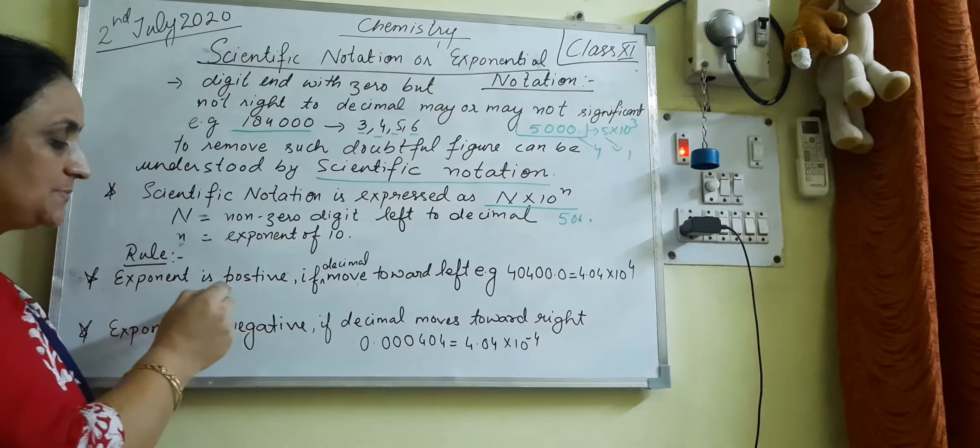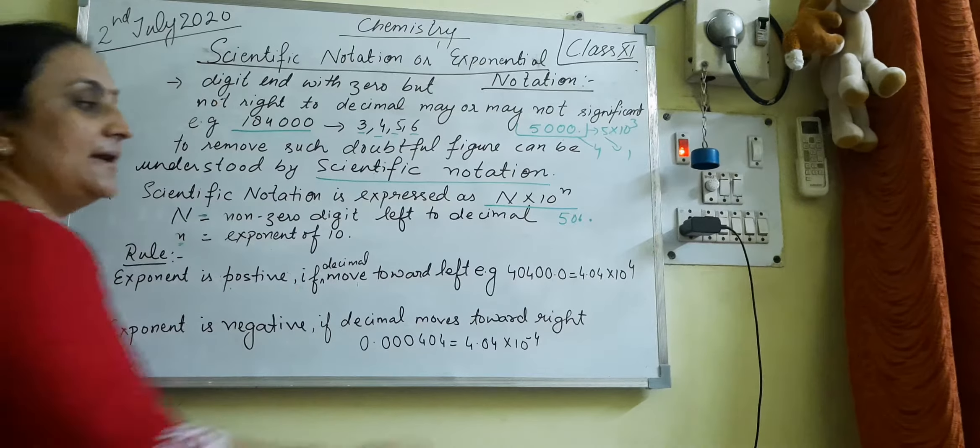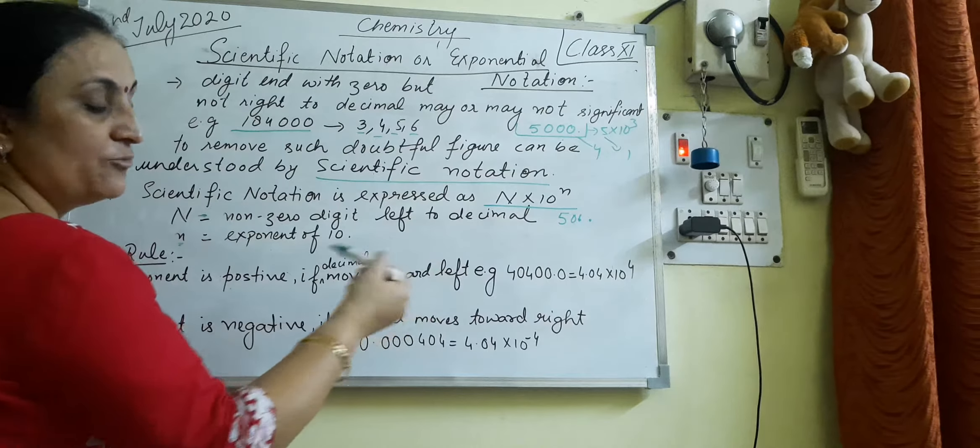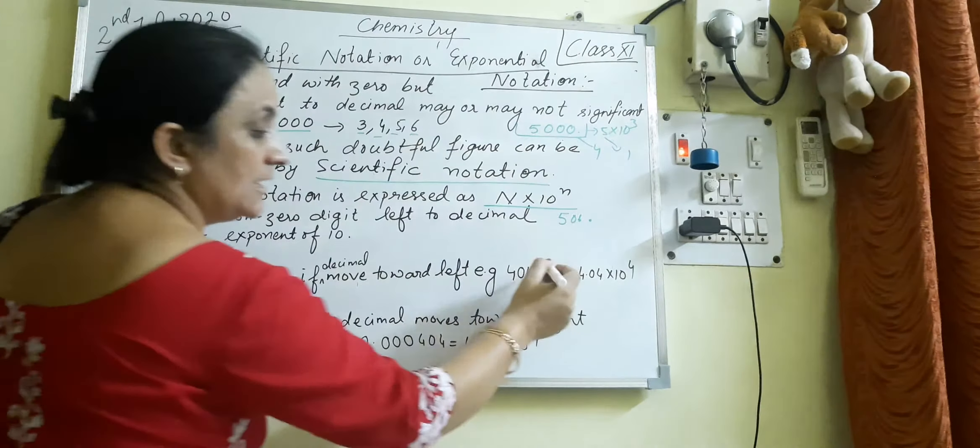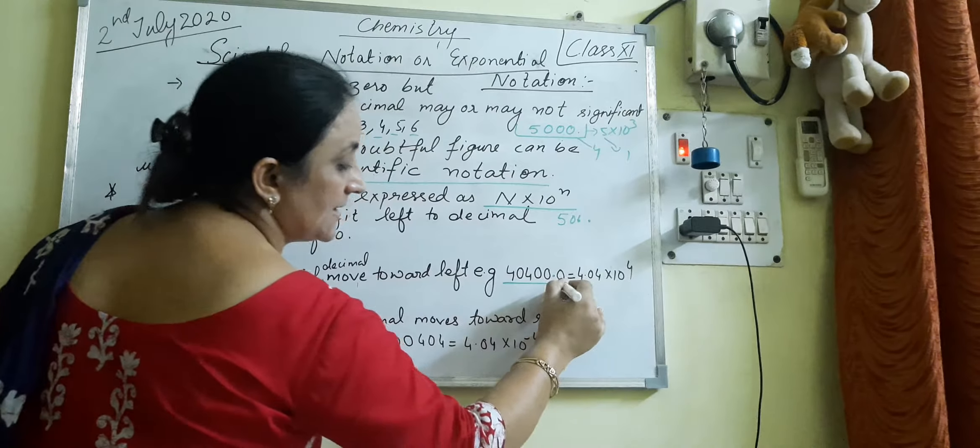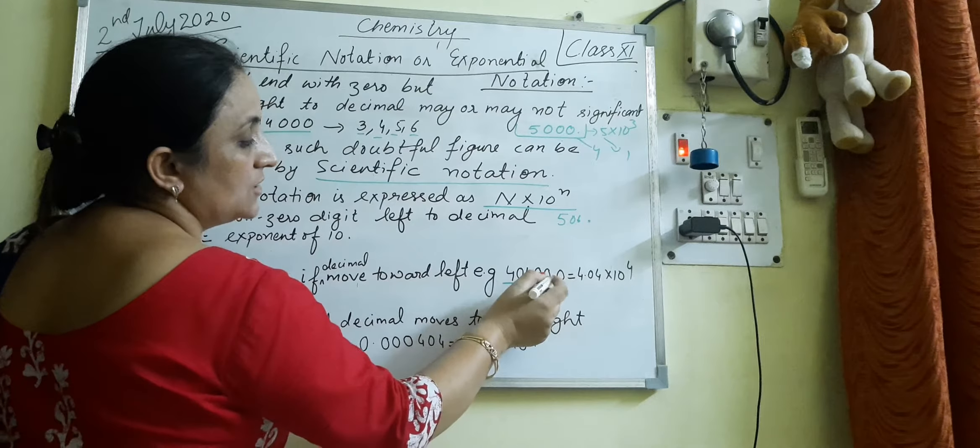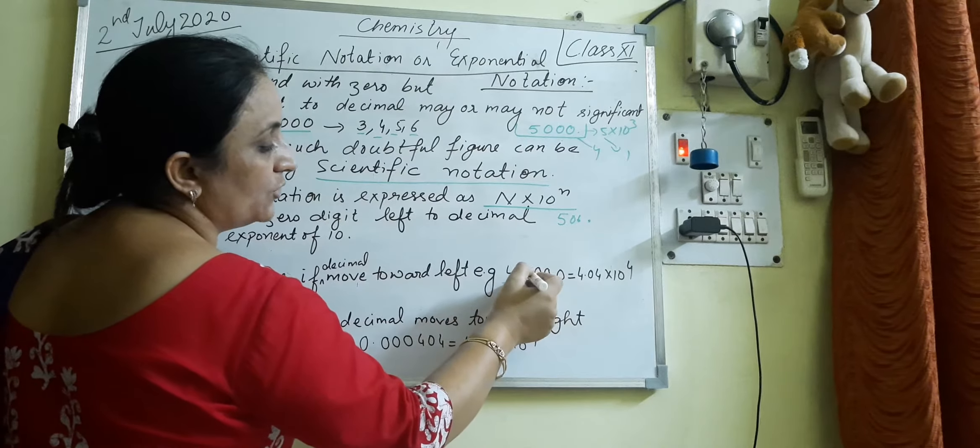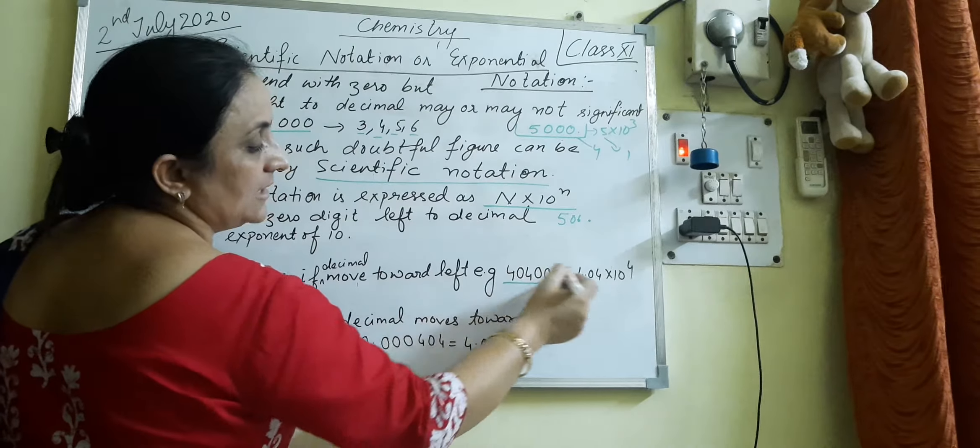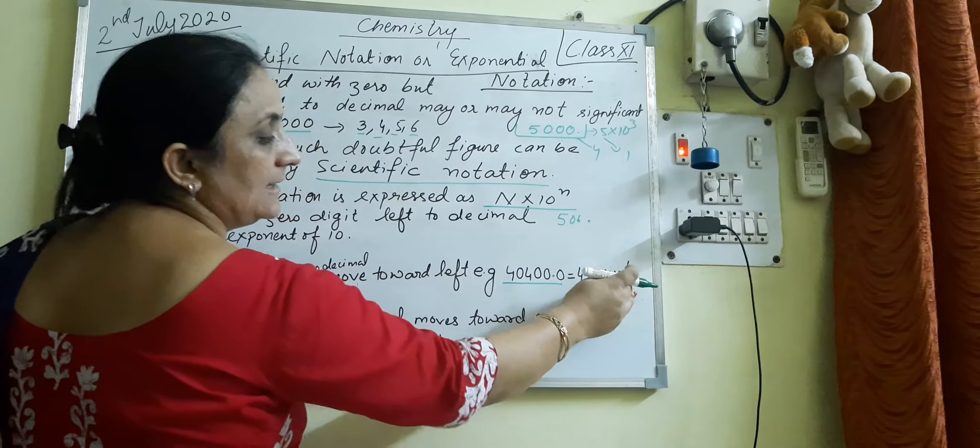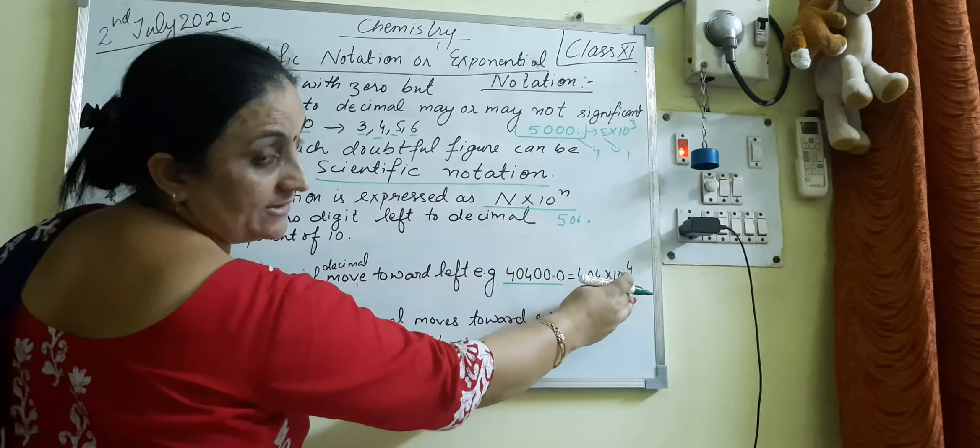First is exponent is positive. The power is positive when the decimal is removed toward the left side. For example, I have written here the example 40400. When the point is moved to the fourth place, then we can write it like 4.04 into 10 raise to power 4, and it is a positive integer.